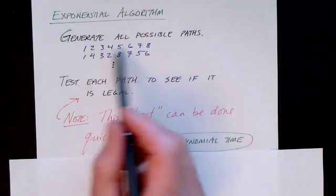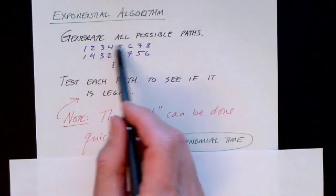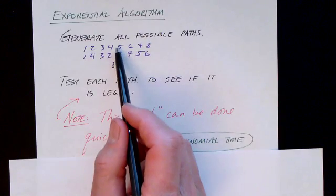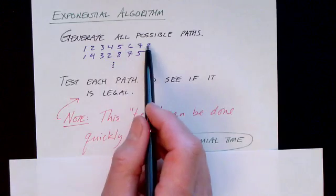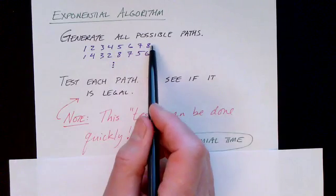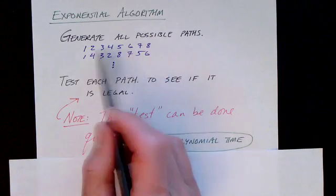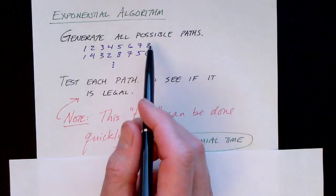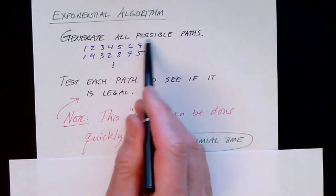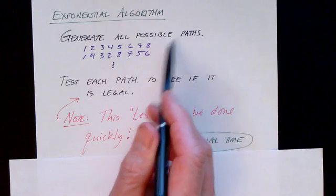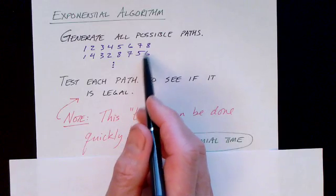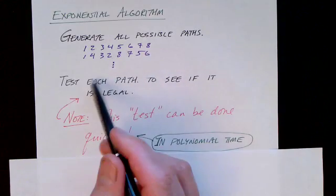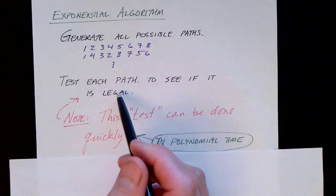But first of all, let me just note that a solution or a path is, in this case of a graph with n nodes, it's a string of n node names, in this case eight nodes. One approach to solving this problem is to generate all possible paths, and there are an exponential number of these possible paths.